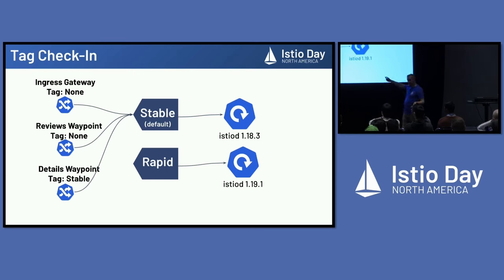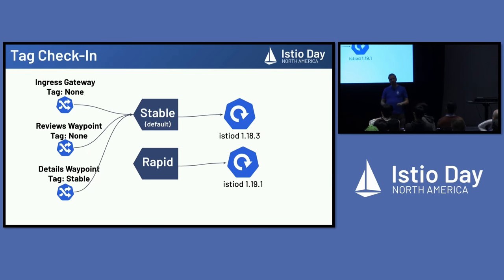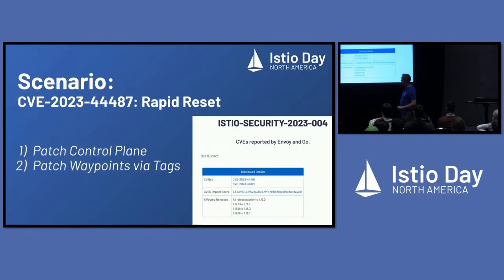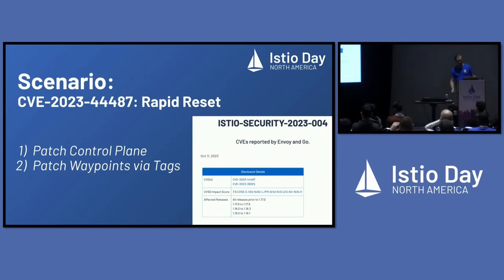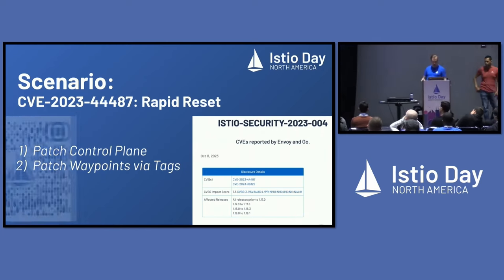We also have a rapid tag available, but nobody's making use of it yet at 1.19.1. These versions should not be in your production right now because of that rapid reset bug. So, let's get to our first demo — we want to go ahead and fix that rapid reset problem.